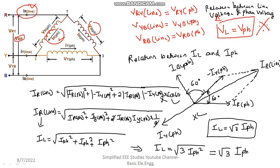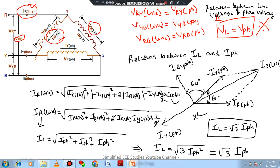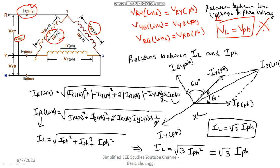So we have derived the relationship between the line current and phase current: the line current will be equal to √3 times the phase current — line current is always greater than phase current in delta connection. We also identified that line voltage is identical with phase voltage. If you have any queries, you can put them in the comment box and I will definitely revert. Thank you for listening to this video.